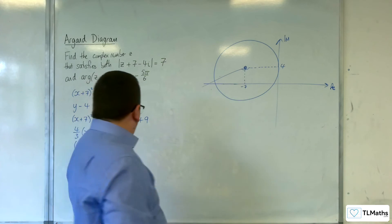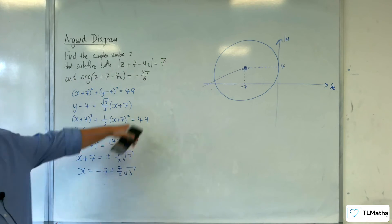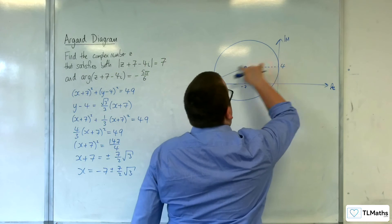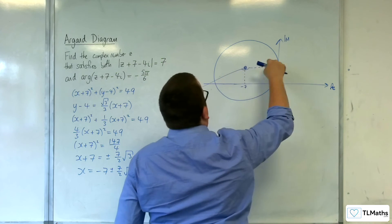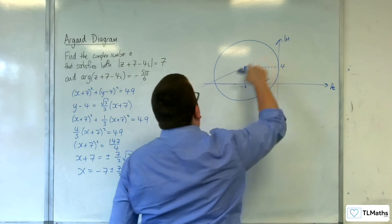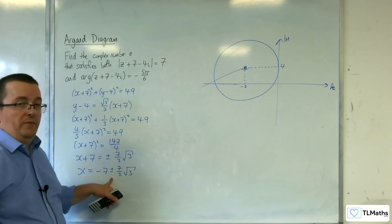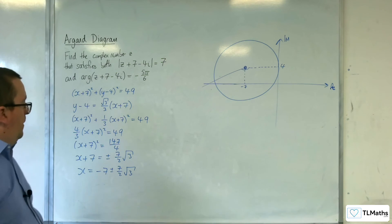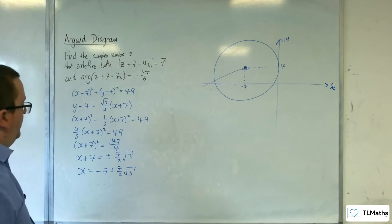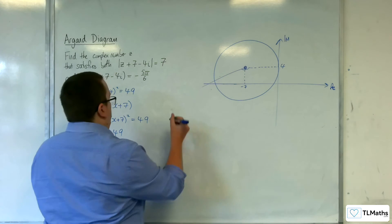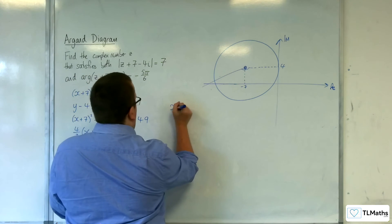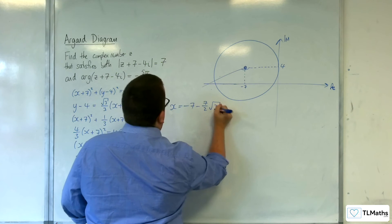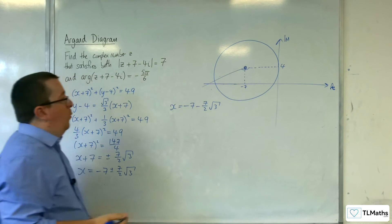We've got two solutions because we extended the line in both directions. I don't want minus 7 plus (7/2)√3 — I only want minus 7 take away (7/2)√3. So x equals minus 7 minus (7/2)√3 is the only solution I want.